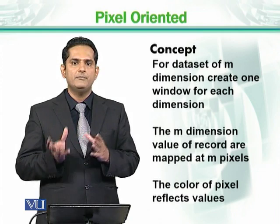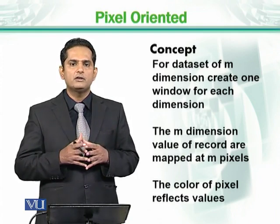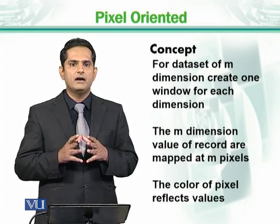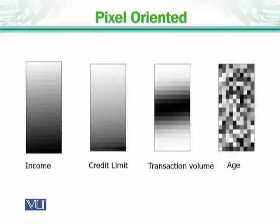The pixel array or matrix in which we have the color information will help to uniquely identify the data points. For example, I have shown an example here. Let's say that we have data representing an employee's income. The dark area, or lower area, represents that the employee's income is low.